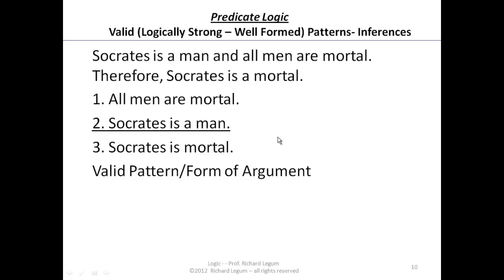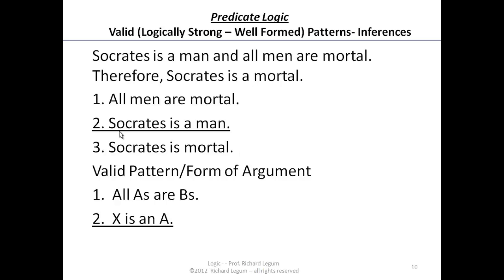Let's look at the logical form of this argument — one we all agree is a good one. The pattern is: all A's are B's. We substitute A for men and B for mortal. Then Socrates becomes X, who is an A, and we get the conclusion that X is a B.